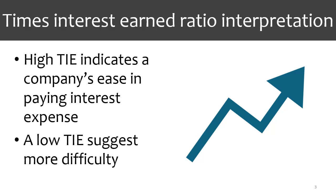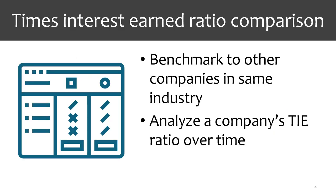A high times interest earned ratio indicates a company's ease in paying interest expense. A low ratio suggests a company will have more difficulty in paying its interest expense. The times interest earned ratio is always more useful when it is used for comparison than by itself. It can be benchmarked against the ratios of companies in the same industry.